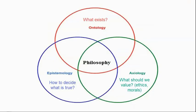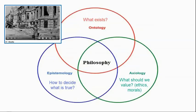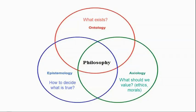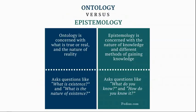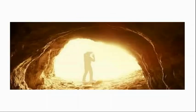Epistemology is how do we decide what's true about what exists. Ontology is what is true, what is real, what is the nature of reality. Epistemology is different methods of gaining knowledge about that reality. It's like ontology tells us this cave exists, and then epistemology is like the flashlight we use to go explore the cave and gain knowledge about it.